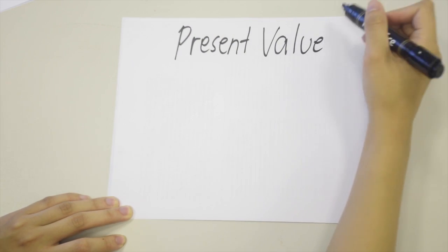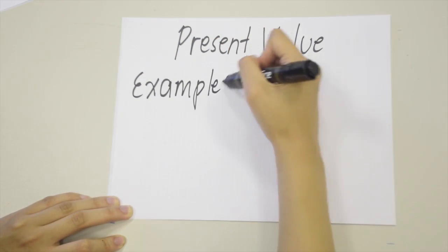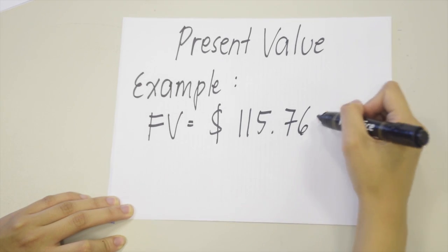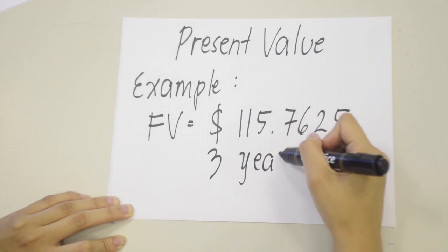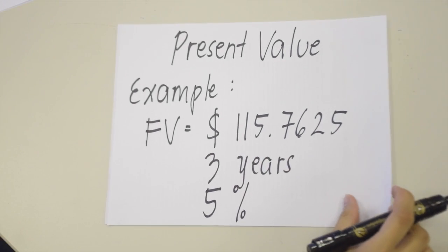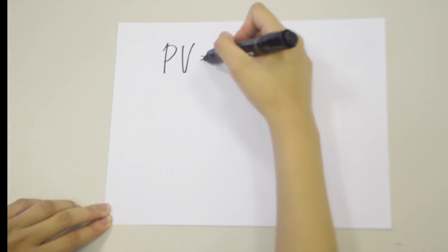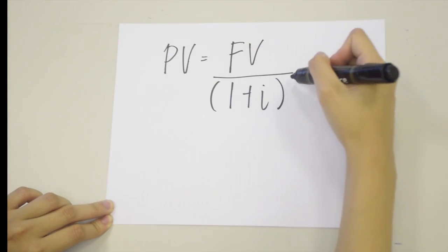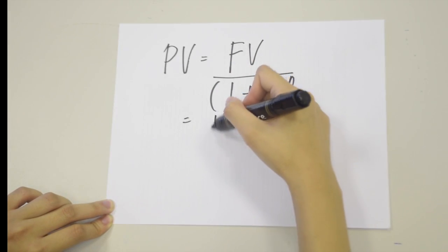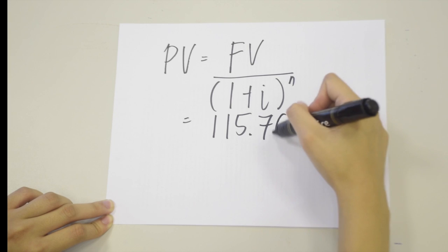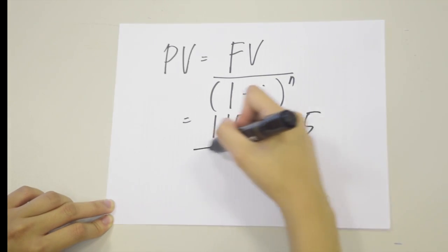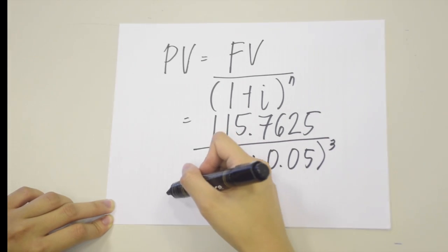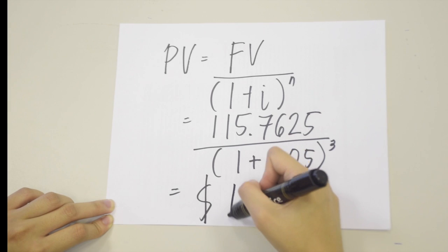Now let's try solving for the present value. For example, we have a principal amount of $115.7625, compounded for three years at 5% annually. To solve for the present value, we use the general formula: PV = FV / (1 + interest rate)^N. Plugging in the values: $115.7625 / (1 + 5%)^3, resulting in a present value of $100.